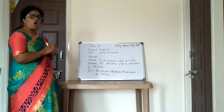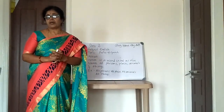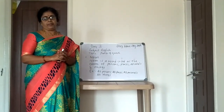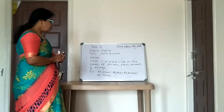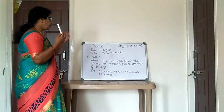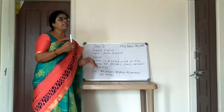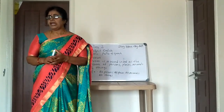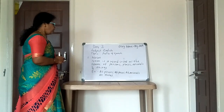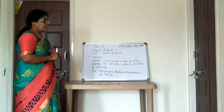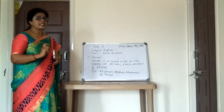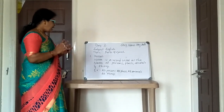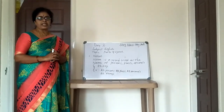All animals on this earth we call noun. All things — whether it is a pen, a board, a table, or a watch — all these are things and we call them noun. So noun is a word used as the name of persons, places, animals, and things.